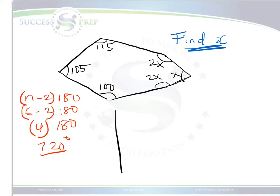As a result, we can add up all the interior angles to 720. So we can say, we could start with 115 plus 2x plus x plus 2x plus 100 plus 105 equal to 720.